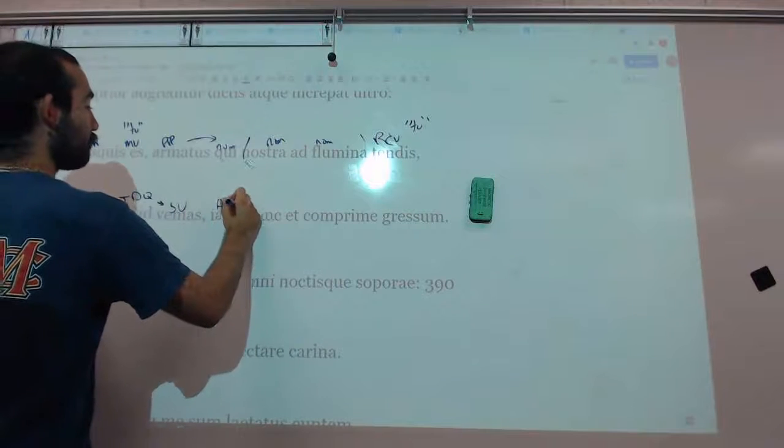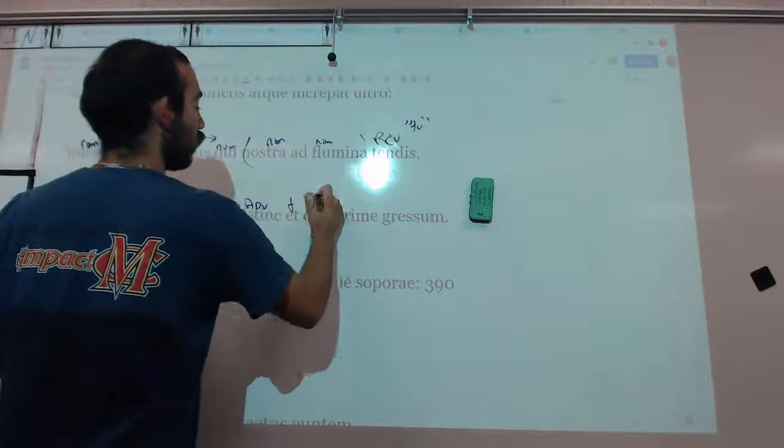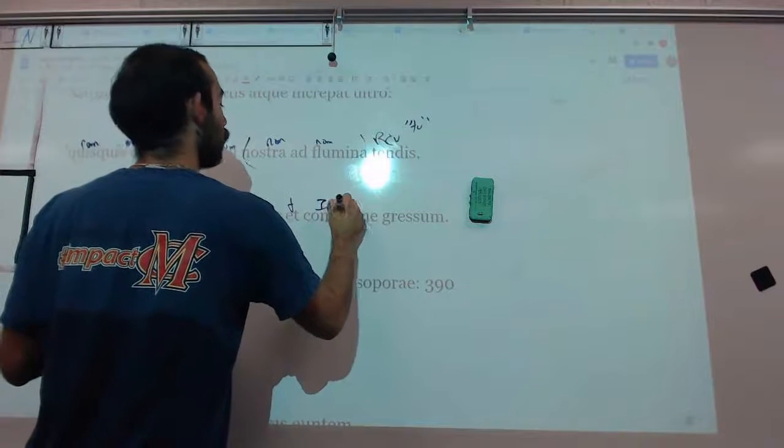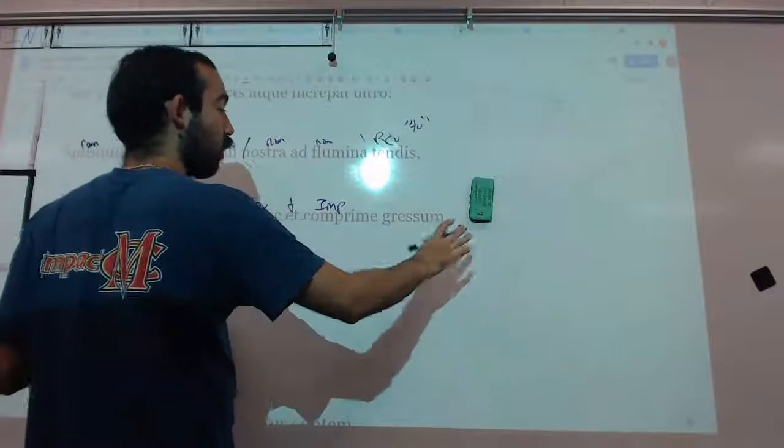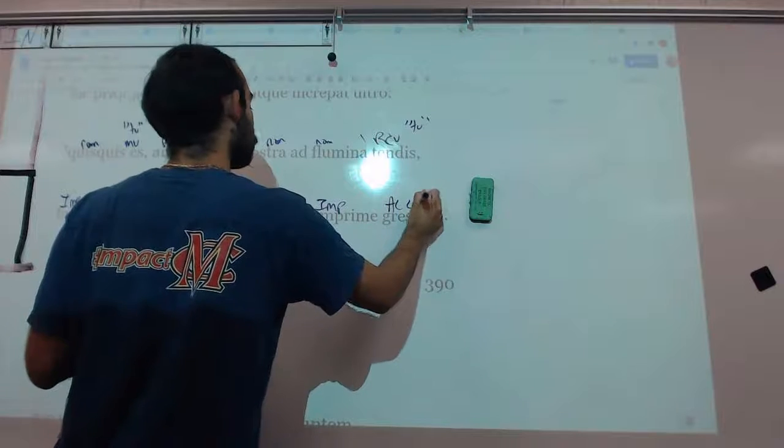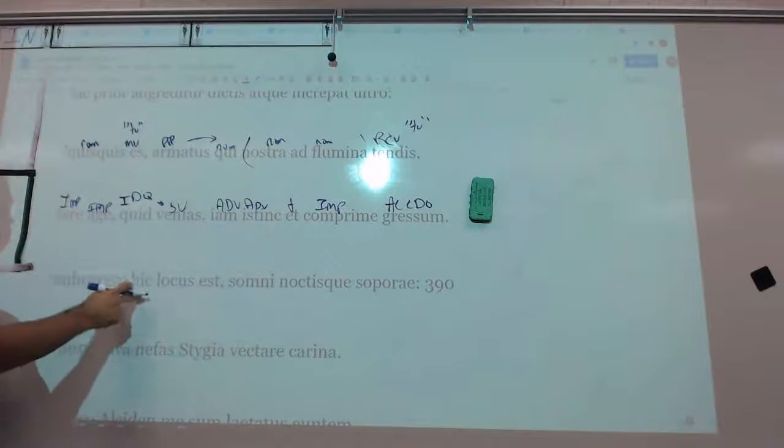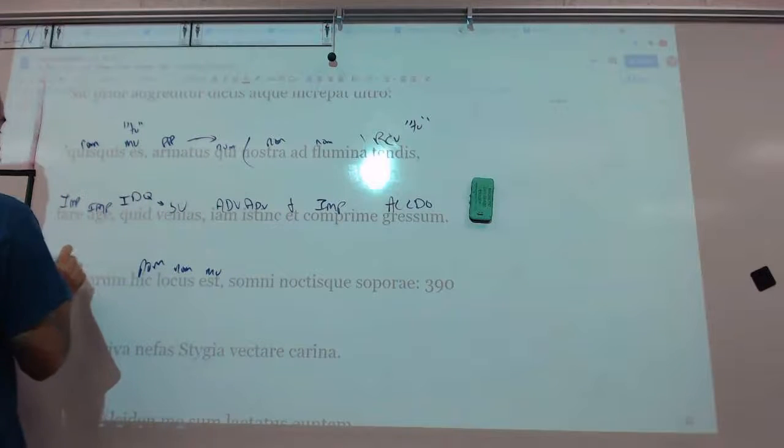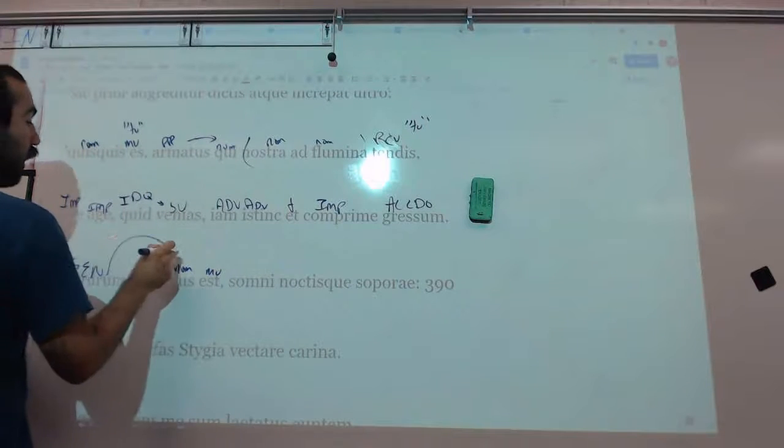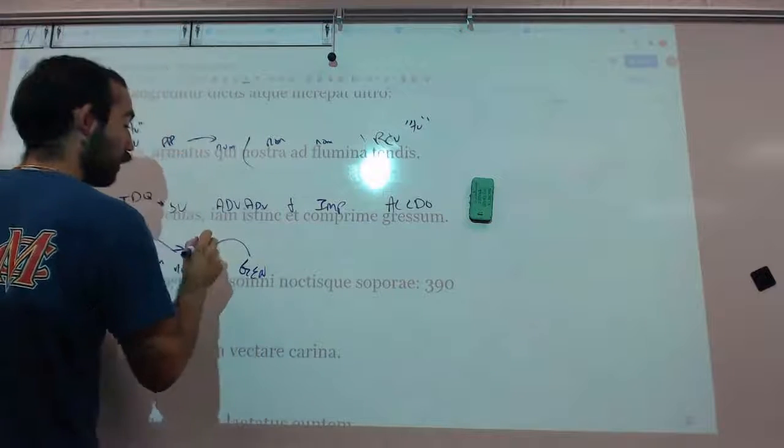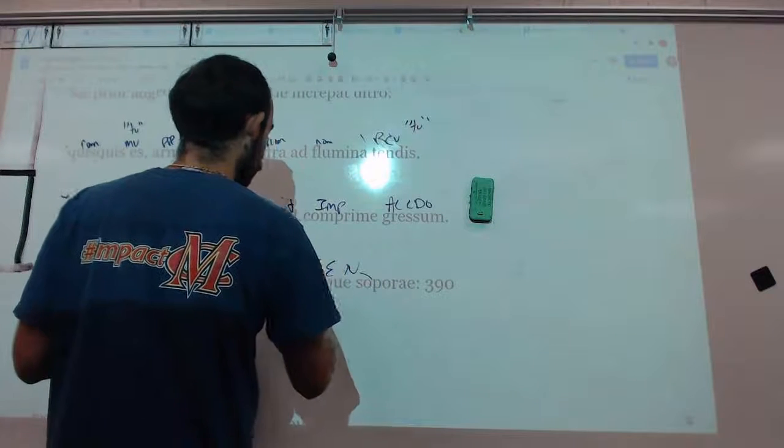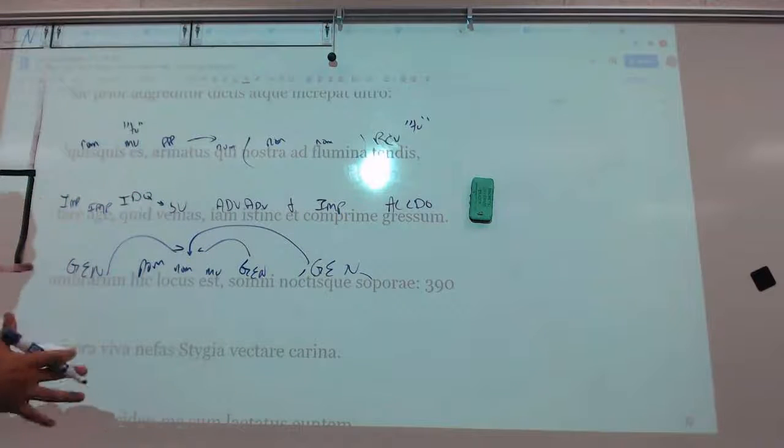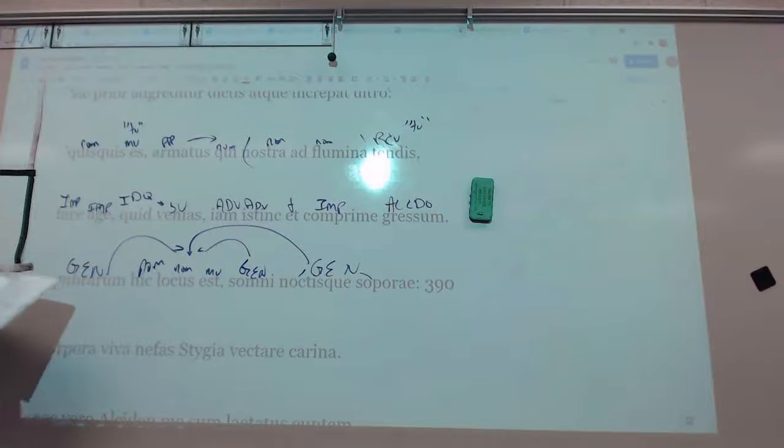Now, from there, et comprime, is another imperative, compress the step, your step, he's like, repress it, hey, don't come closer. Umbrarum, haec locus est, this locus est umbrarum, is of shades, et somni noctisque soporae. All these genitives go to the locus because he's describing what this place is, this place of death. It's a place of shades, of sleep, the idea of death is you're asleep forever. Go figure.